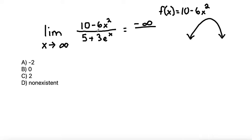For the denominator, this is an exponential function. It has a positive leading coefficient. And so if we treat the bottom as g of x is 5 plus 3 e to the x, it's going to have a general shape that looks like this.